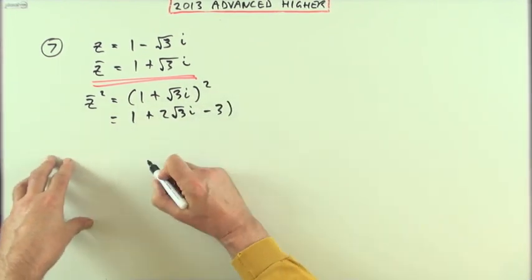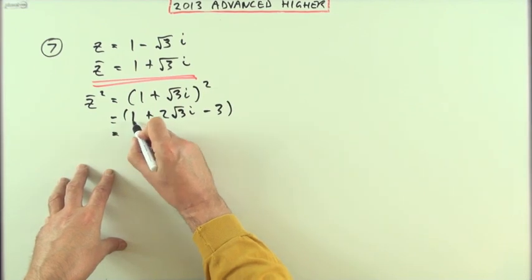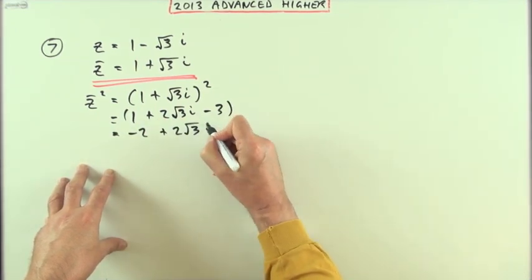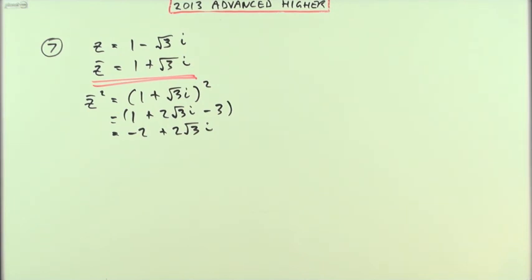So that I've got -2 + 2√3i. It's looking a bit worse actually doing this to change into polar form.